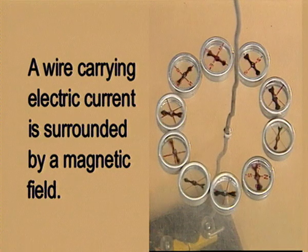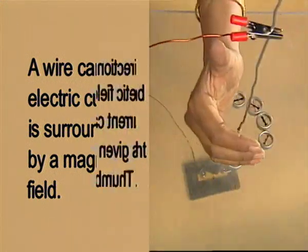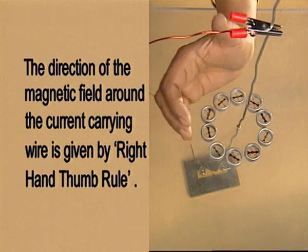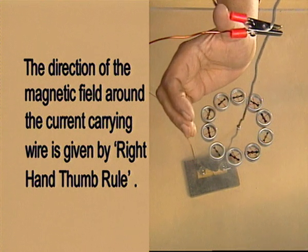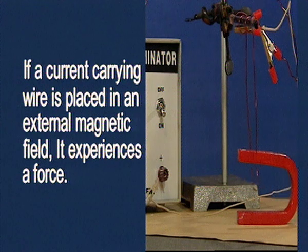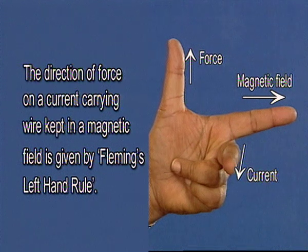A wire carrying electric current is surrounded by a magnetic field. The direction of the magnetic field around the current carrying wire is given by the right-hand thumb rule. If a current carrying wire is placed in an external magnetic field, it experiences a force. The direction of force on a current carrying wire kept in a magnetic field is given by Fleming's left-hand rule.